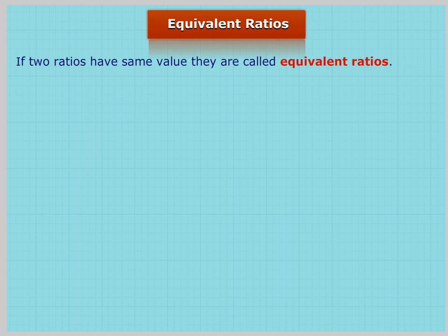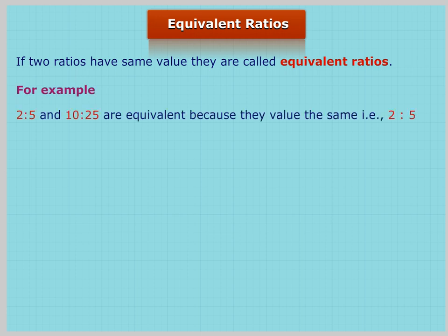Equivalent Ratios: If two ratios have the same value, they are called Equivalent Ratios. For example, ratio of 2 to 5 and 10 to 25 are equivalent because their value is the same. That is, ratio of 10 to 25 equals 10 upon 25, which equals 2 upon 5, which equals ratio of 2 to 5.